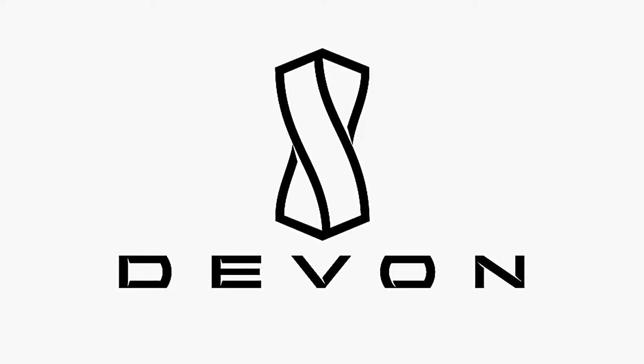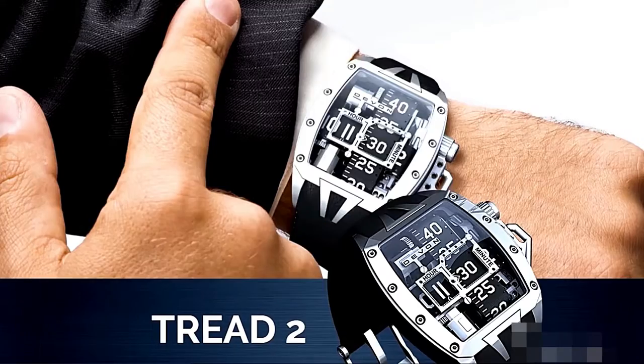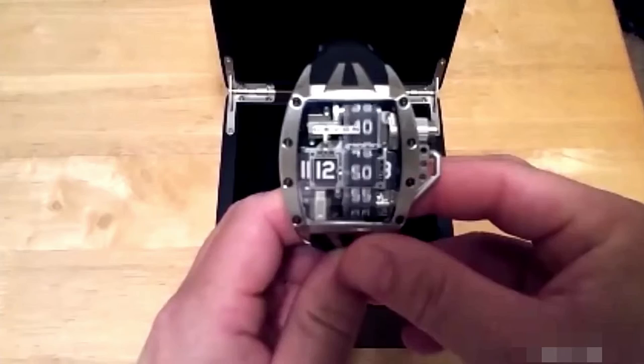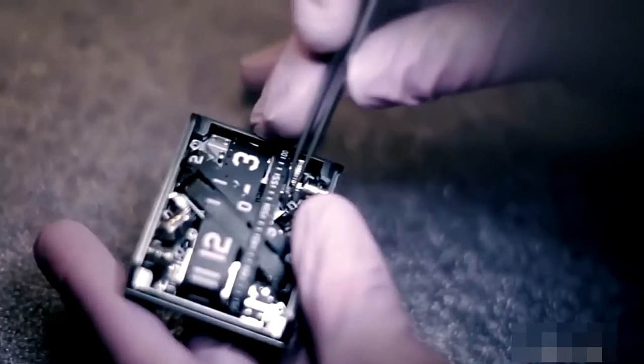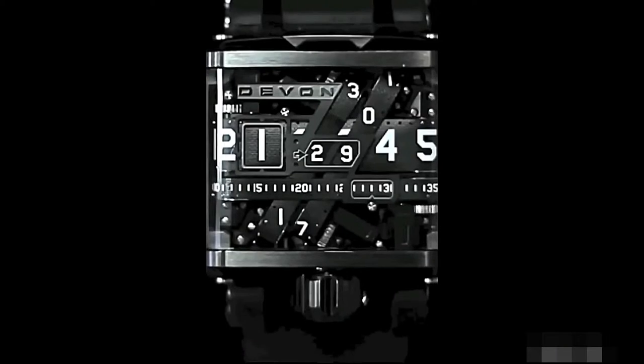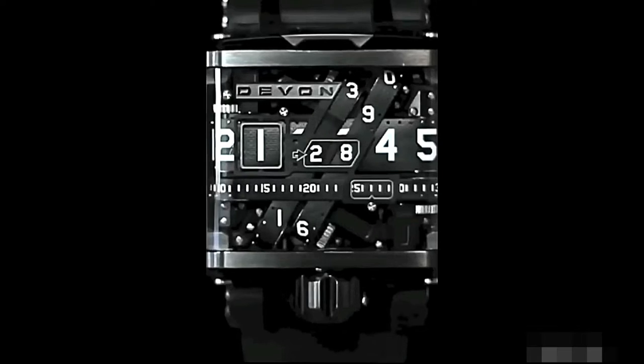First up are some incredible creations from LA-based watchmakers Devon. Their Tread 1 and Tread 2 watches are powered by innovative movements based on a patented system of interwoven time belts that indicate the hours, minutes, and seconds, all controlled by an onboard microprocessor. Just watching the dial in motion is truly a mesmerizing experience.